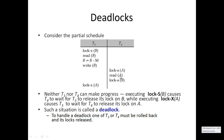T4 also requests a shared lock on data item B but cannot get permission since it is held by T3. Then T3 wants to access exclusive mode on data item A but cannot get permission since T4 holds it. The situation is: T3 wants data item A but cannot get it because T4 holds it, and T4 wants data item B but cannot get it because T3 holds it.